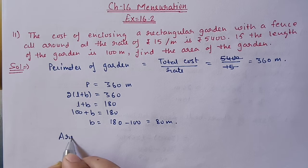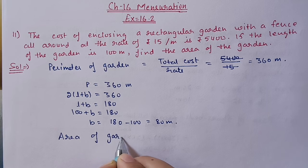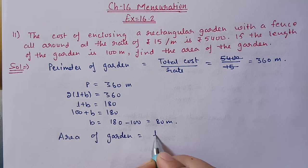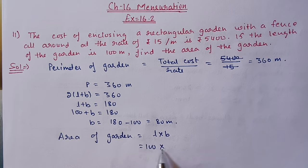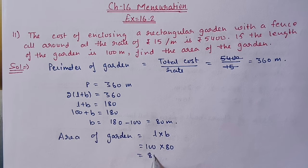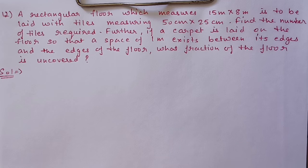Next we find the area of the garden. Area of garden equals length into breadth: 100 into 80, which equals 8000 square meters. Next we have Question 12: a rectangular floor measuring 15 meters by 8 meters is to be laid with tiles measuring 50 cm by 25 cm. Find the number of tiles required.